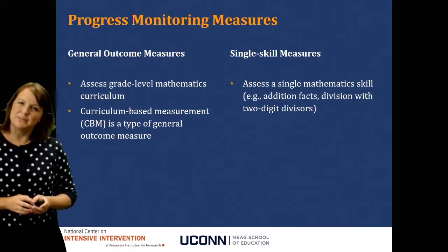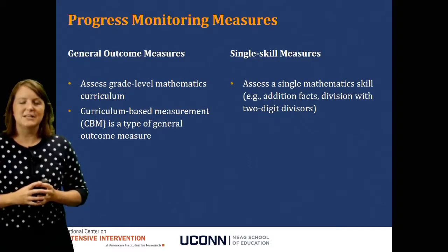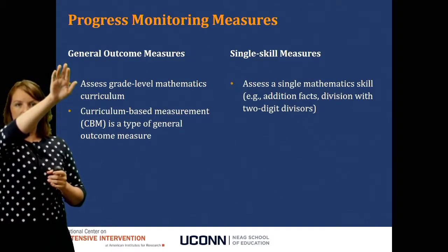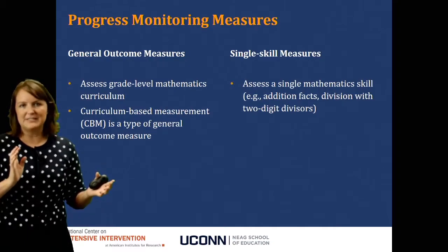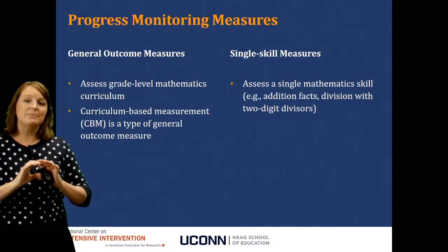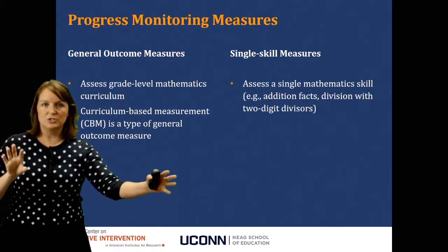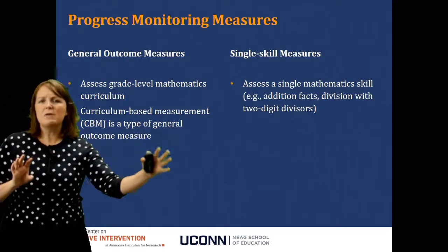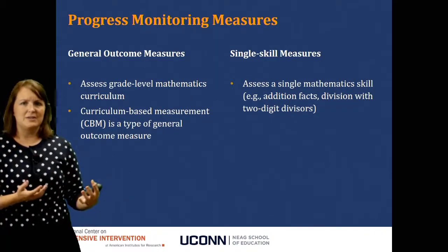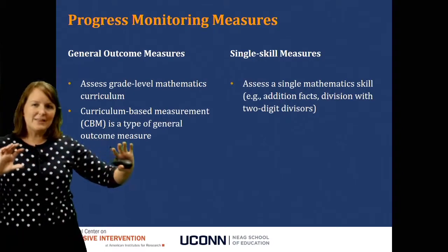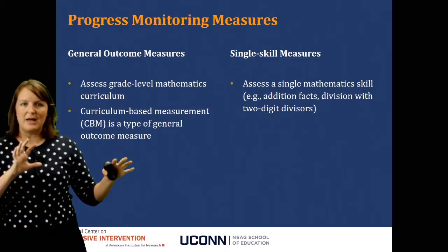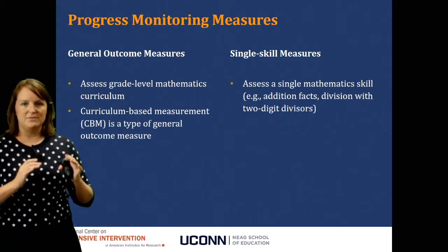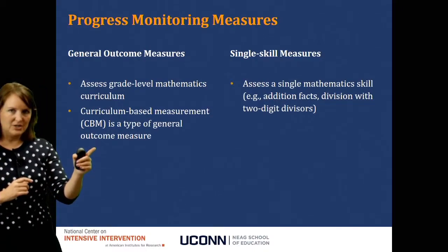There are two types of formative assessment that fall under the umbrella of progress monitoring measures. First, we have general outcome measures. Think of these as measures that are general to the student's math knowledge — they may have lots of different types of problems. They assess what the general outcomes are that a student needs to know by the end of grade two or grade five. They assess the grade level mathematics curriculum with a mix of problems. CBM is just one type of general outcome measure.